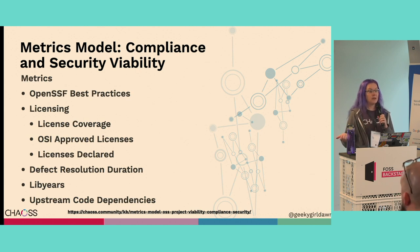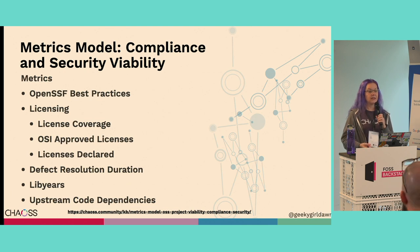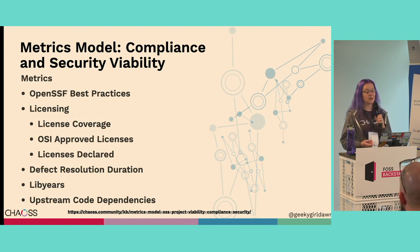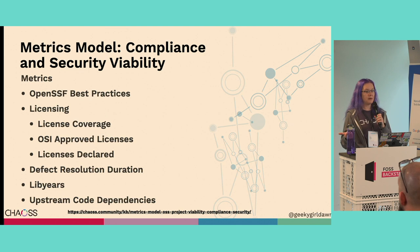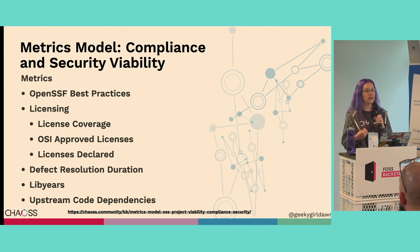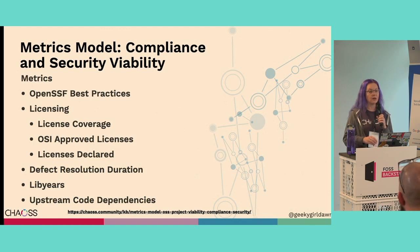One good way to evaluate the security of an open source project is with the OpenSSF scorecard, which contains a wealth of information about security beyond just the score. Defect resolution duration, lib years, and other dependency measures are also important because projects that are slow to fix vulnerabilities and update dependencies will be less secure — and you don't want to ship products containing open source projects with shoddy security practices. License compliance is also critical, so it's important to look closely at the licenses used in an open source project, as this can make or break whether you can actually use or include it within your product.